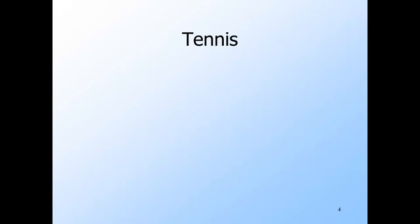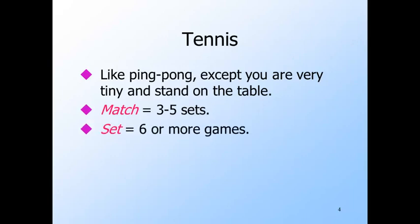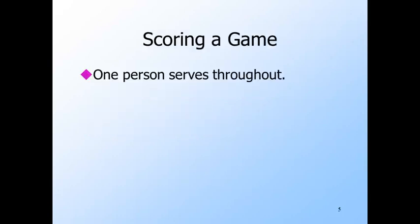To see the power and also the limitations of a finite automaton, we shall take up an example: scoring a game of tennis. If you don't play tennis, it's almost like ping pong, except you are really tiny and you stand on the table. The scoring system is arcane, with matches consisting of sets, which consist of games. Games consist of points where one player or the other wins by causing the other player to hit the ball off court or into the net. We'll talk about scoring a game — one player is server throughout the game.